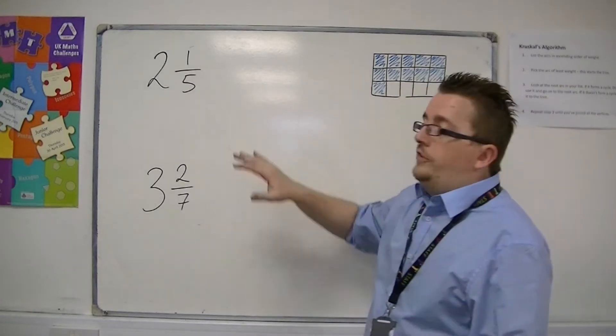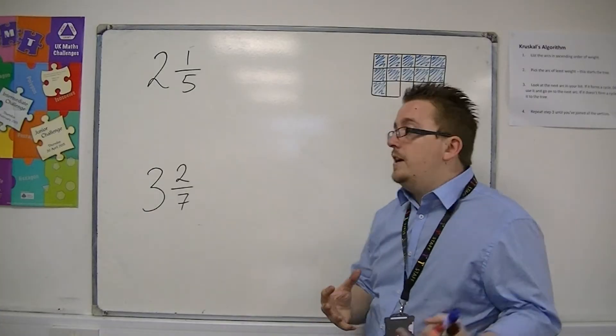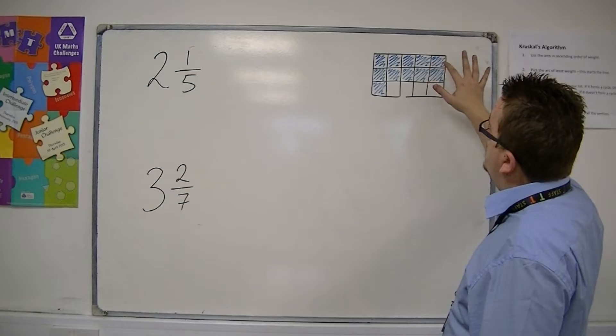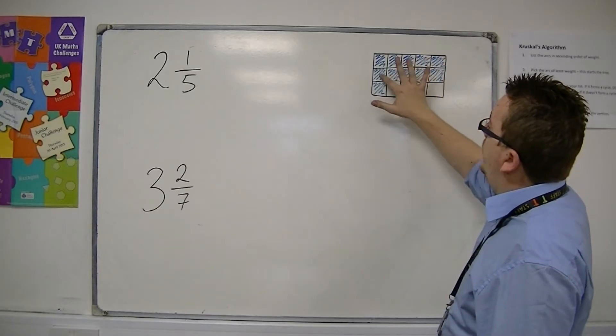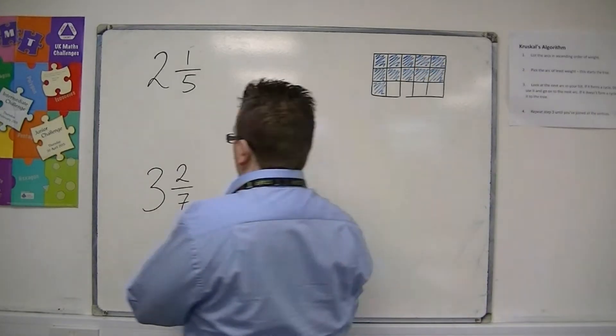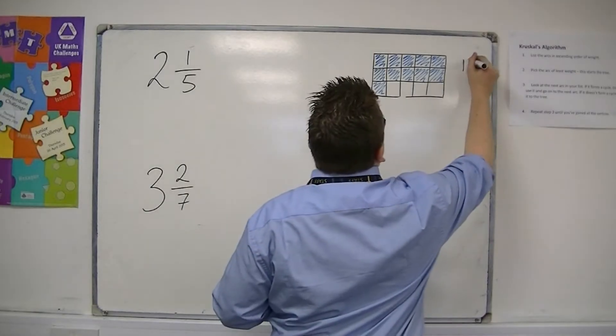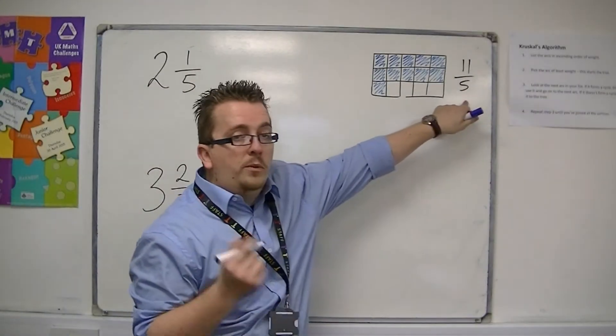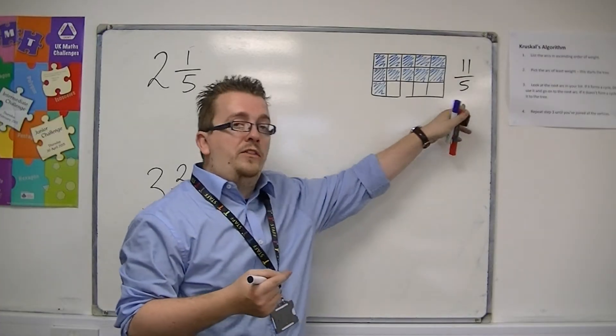Now, in order to turn that into an improper fraction, what we actually have here is 1, 2, 3, 4, 5, 6, 7, 8, 9, 10, 11 fifths. So we know, actually, that 2 and 1/5 is equivalent to 11/5. And this is the mixed number.